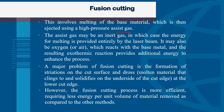The major problem of fusion cutting is the formation of striations on the cut surface and dross — which is molten material that clings to and solidifies on the underside of the cut edge. However, the amount of dross is minimal compared to other cutting processes such as band saw or CNC cutting. Despite this drawback, fusion cutting is the most efficient method, requiring less energy per unit volume of material compared to the other two methods.